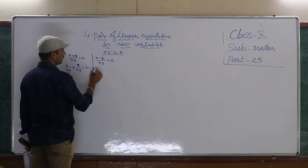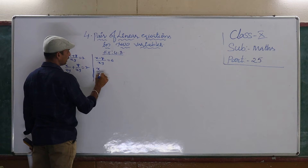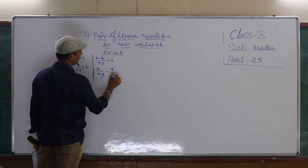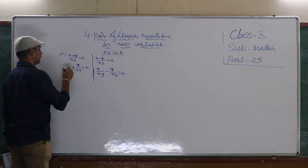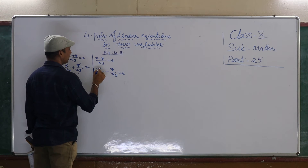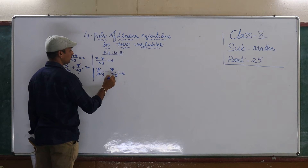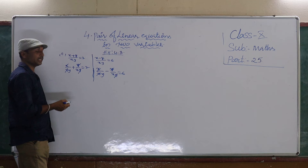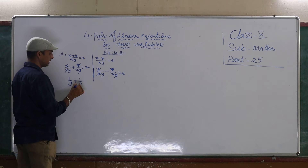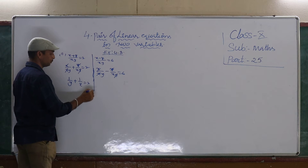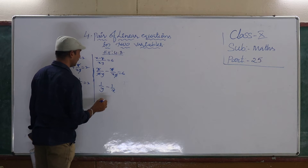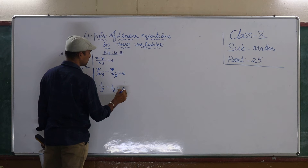So, separately, if you take here, x by xy minus y by xy is equal to 6. Now, here, xx cancel, yy cancel. Here also, same line. The remaining is 1 by y plus 1 by x is equal to 2. Then, 1 by y minus 1 by x is equal to 6.